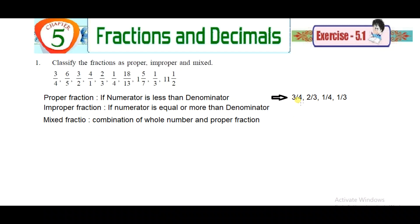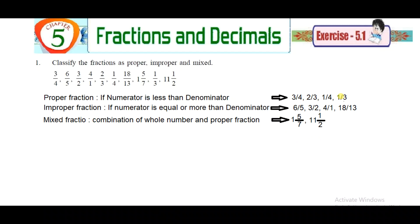Now let's classify them. Proper fractions are those where the numerator is less than the denominator: 3/4, 2/3, 1/4, and 1/3. Similarly, the improper fractions are 6/5, 3/2, 4/1, and 18/13. For mixed fractions, we have only two numbers: 1 and 5/7, and 11 and 1/2. This is a simple solution.